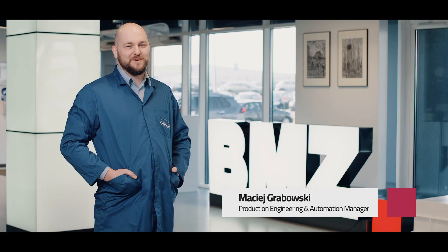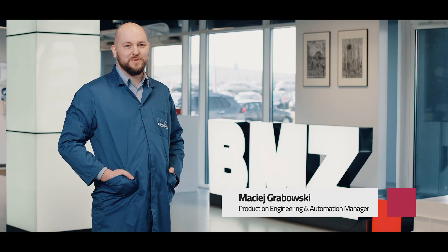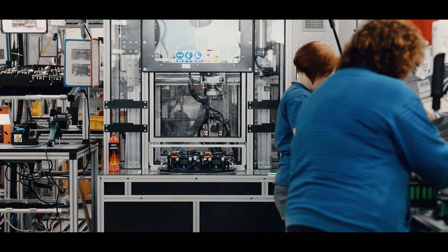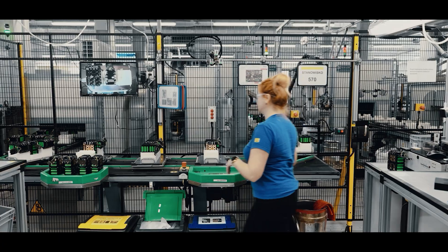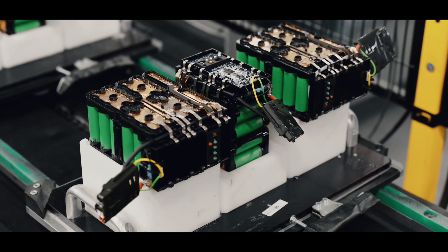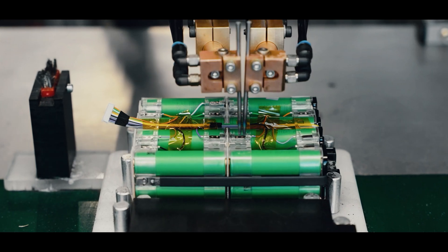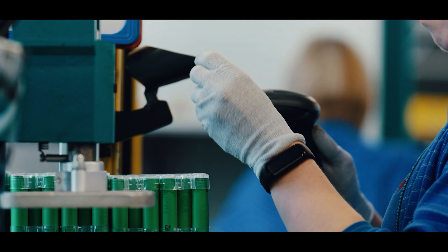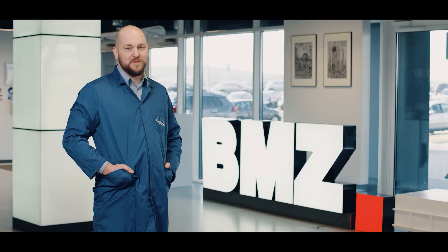There are several key aspects to consider when introducing robotisation into the battery assembly process. An important element is a more ergonomic workstation for the operator. Another aspect is the elimination of potential assembly errors that can lead to unwanted incidents on the line.